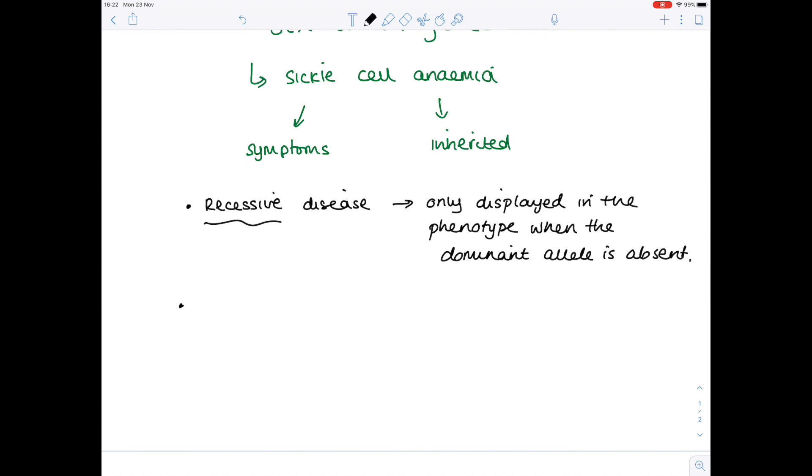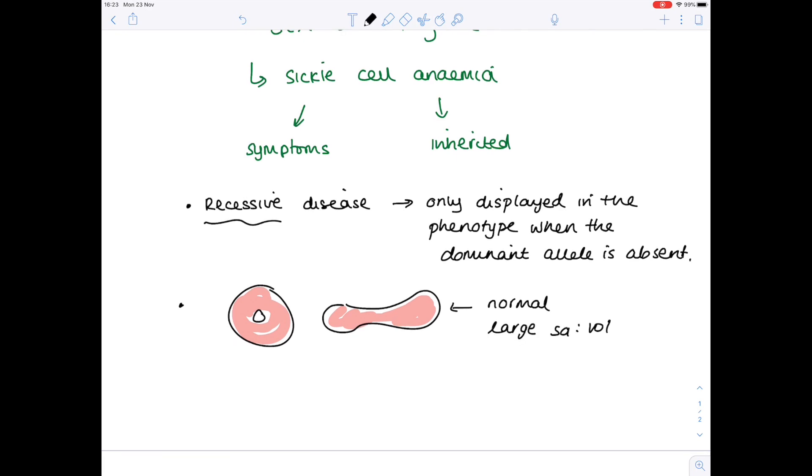Sickle cell anemia means that rather than getting your normal biconcave red blood cells, so hopefully you remember they're quite donut-shaped, and this is the normal situation when they have a large surface area to volume ratio, which means they can transport lots of oxygen.